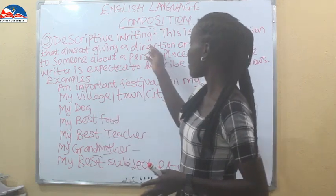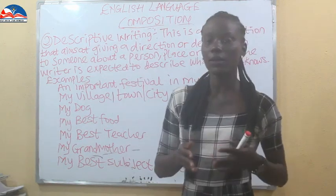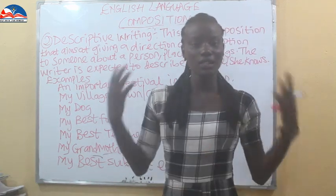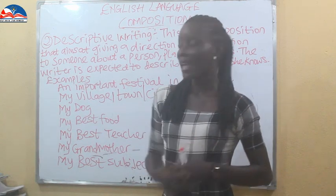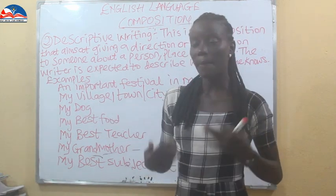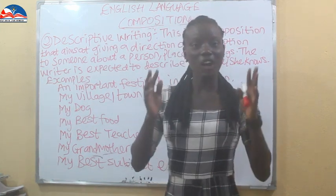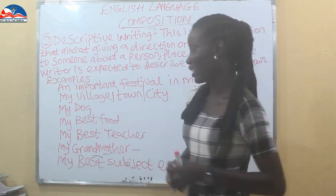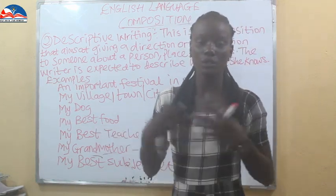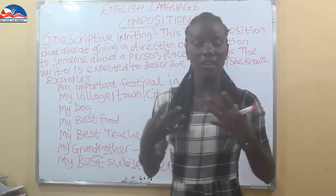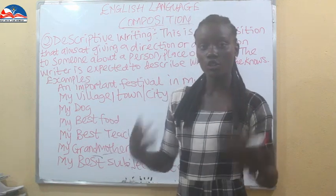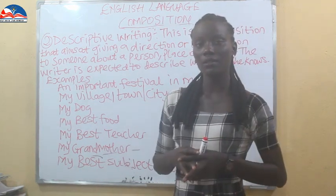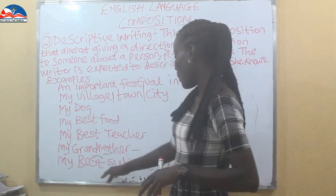We also have 'My village, town and city' — remember, descriptive writing is about giving direction or description. You are going to give a description about a village, town, or city. We also have 'My dog' — I might not know the dog, but you describe how it looks, its size, everything, so I have a clear picture. Other examples include 'My best food' and how to prepare it, 'My best teacher,' and 'My grandmother' — a full description about that particular person.